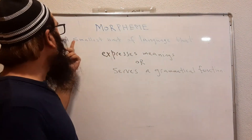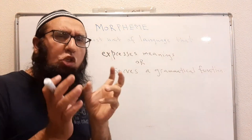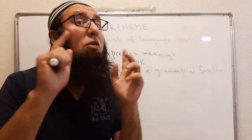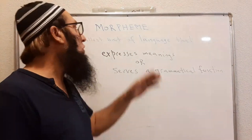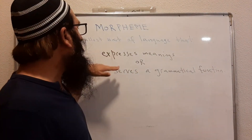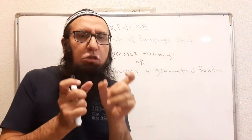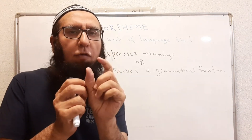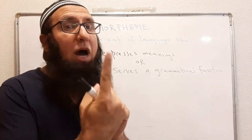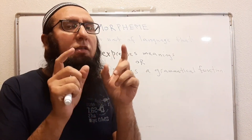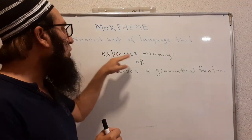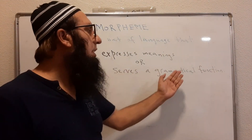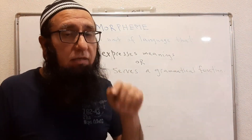Morpheme is a word we use in English language that means the smallest unit of language — the smallest part. A unit could be even one letter. A morpheme could be one letter or more than one — a group of letters — that expresses meaning. This small unit, one letter or a group of letters, has two things: it either expresses some kind of meaning, or it serves a grammatical function — sometimes no meaning, but it serves a grammatical function.